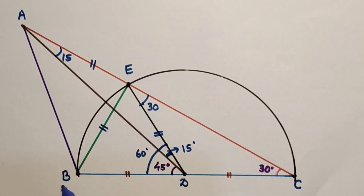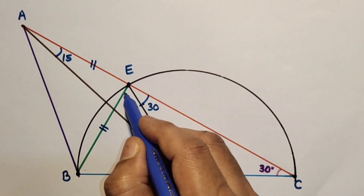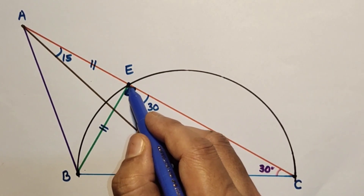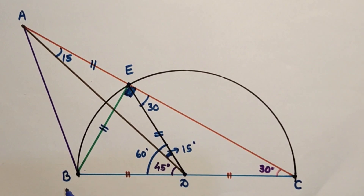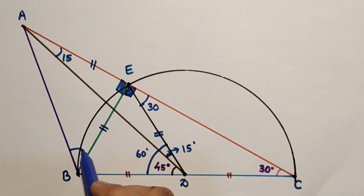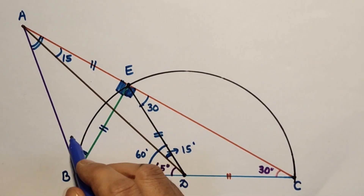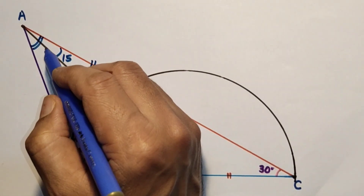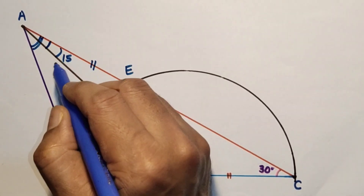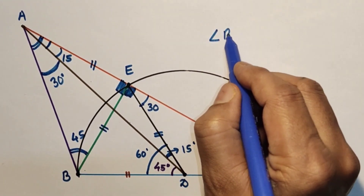Since BE, ED, DB, and EA are all equal, EA equals EB. The angle at E subtended by the diameter of the semicircle is 90 degrees. With angle AEB equal to 90 degrees and EA equal to EB, the two base angles are each 45 degrees. The full angle BAE is 45 degrees, and angle DAE is 15 degrees, so angle BAD equals 45 minus 15, which is 30 degrees. Once again, angle BAD equals 30 degrees, and that is the answer.